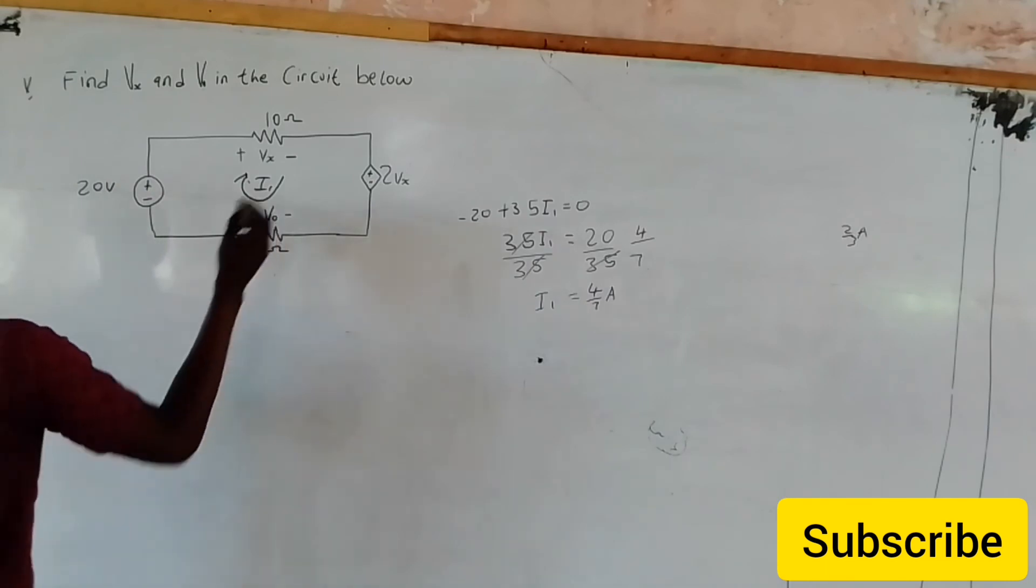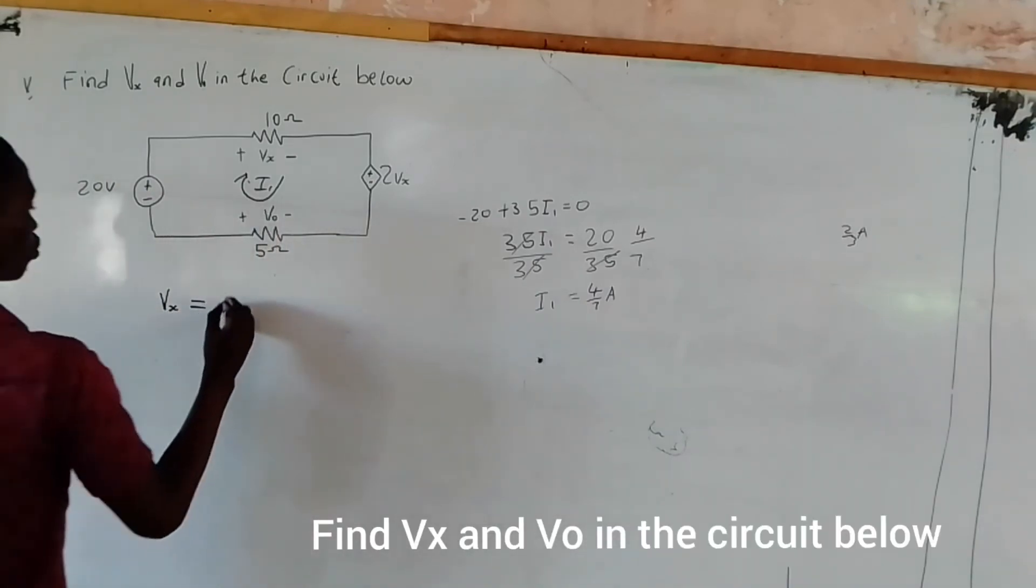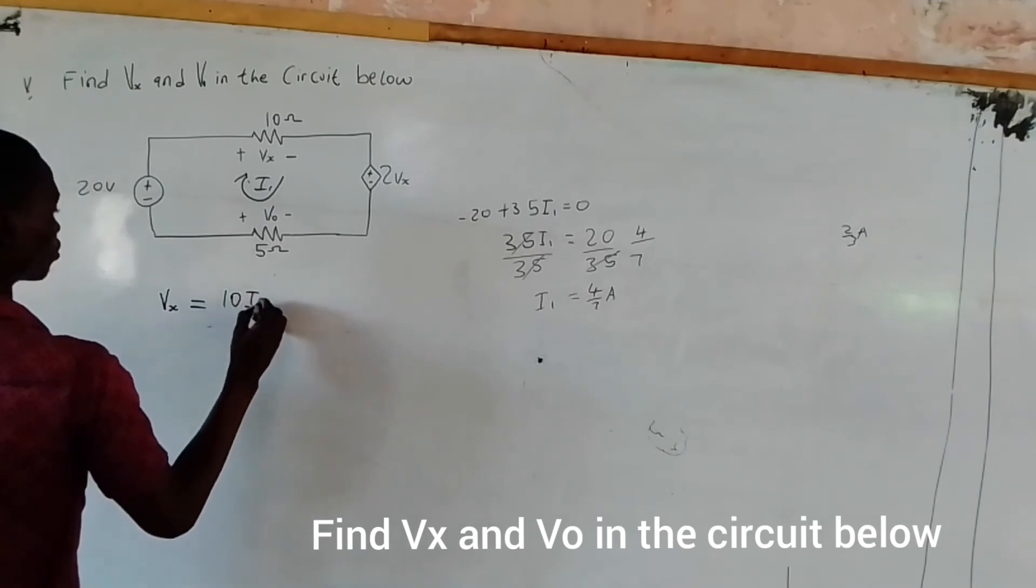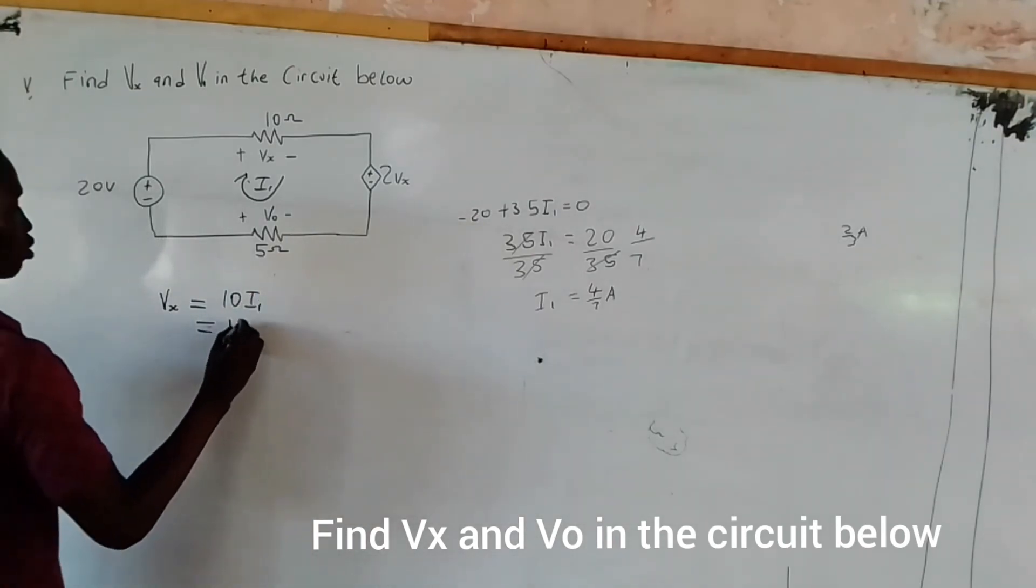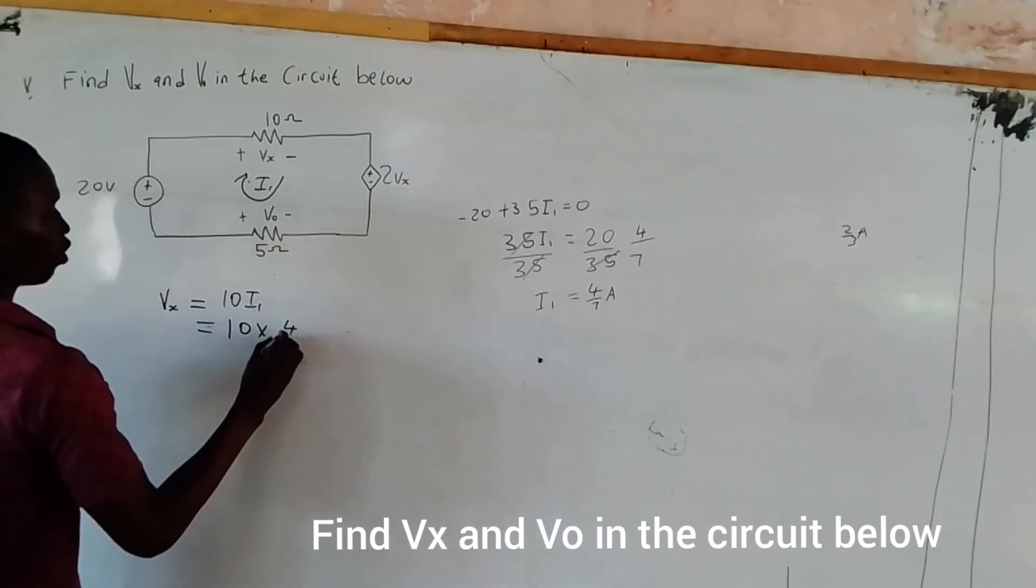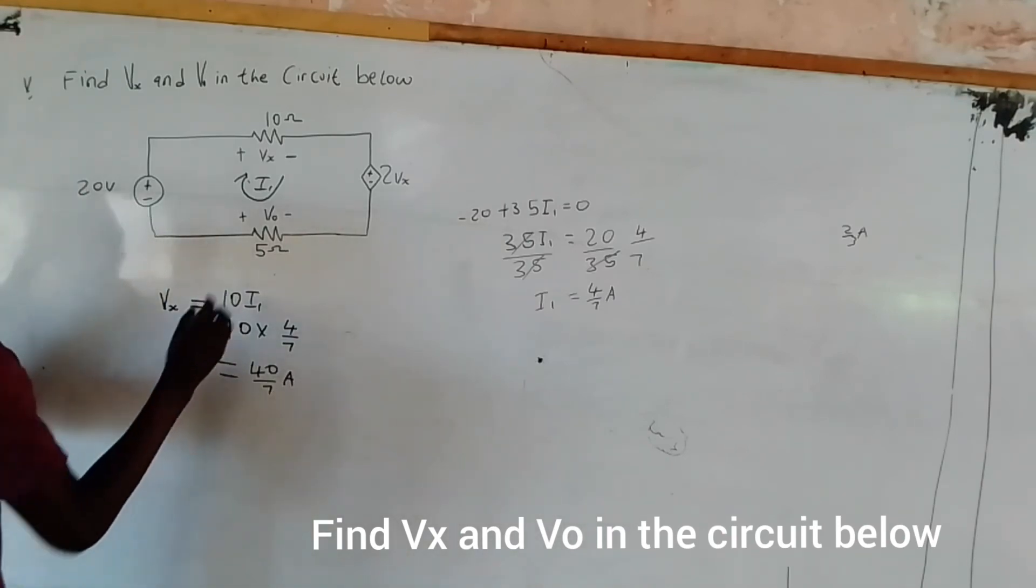So now we are looking for Vs. Vs equals 10I1 like we said. So that would be 10 times 4 over 7, and that's going to give us 40 over 7 amps.